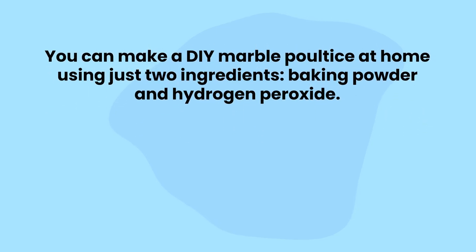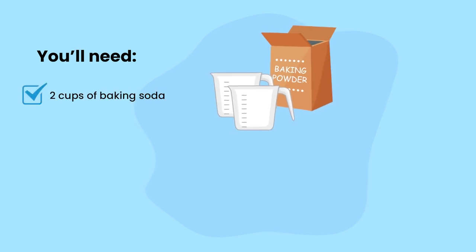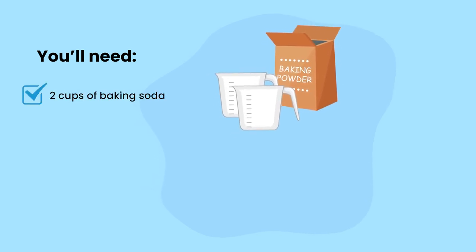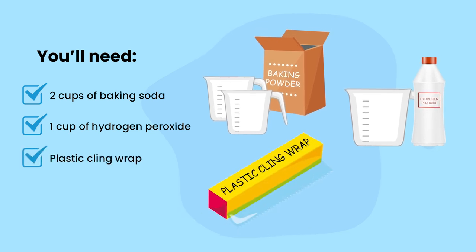How to make a marble poultice: you can make a DIY marble poultice at home using just two ingredients, baking powder and hydrogen peroxide. You'll need two cups of baking soda, one cup of hydrogen peroxide, plastic cling wrap, and duct or masking tape.